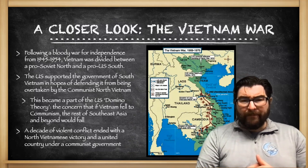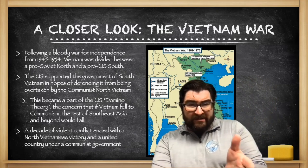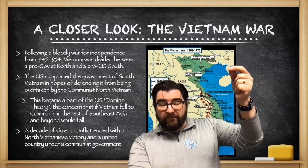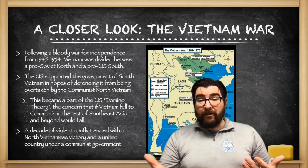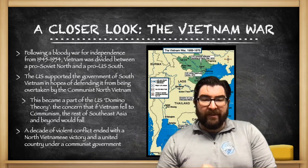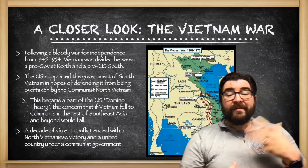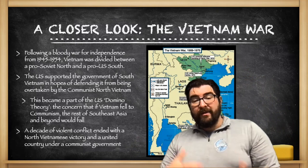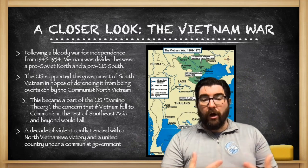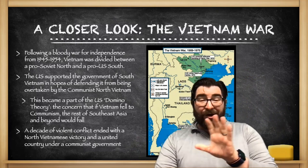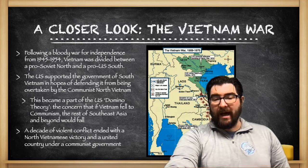Another proxy war is Vietnam. Following a bloody war for independence from France from 1945 to 1954, Vietnam was divided between a pro-Soviet North and a pro-American South. The US supported the South in hopes of defending it from being overtaken by the communists in North Vietnam. This became part of the domino theory — the concern that if Vietnam fell to communism, the rest of Southeast Asia and beyond would also fall. A decade of violent conflict ended with a North Vietnamese victory and a united country under a communist government.